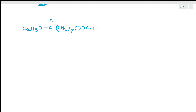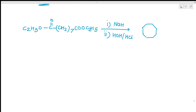For example, if we take C₂H₅OOC-(CH₂)₇-COOC₂H₅ and treat it with NaH then H₃O⁺, we get an 8-membered ring product with C=O and COOC₂H₅. But the yield of this product is very low — only 49% yield.